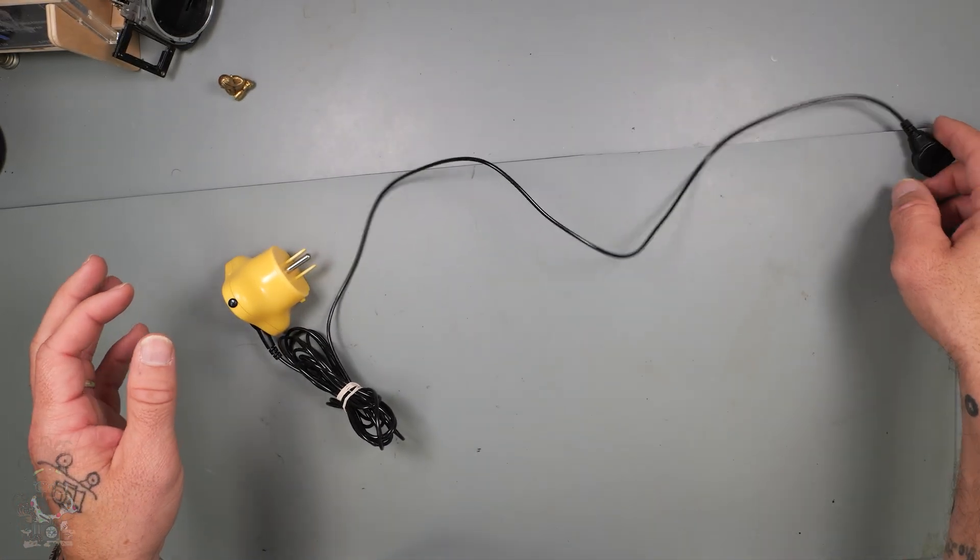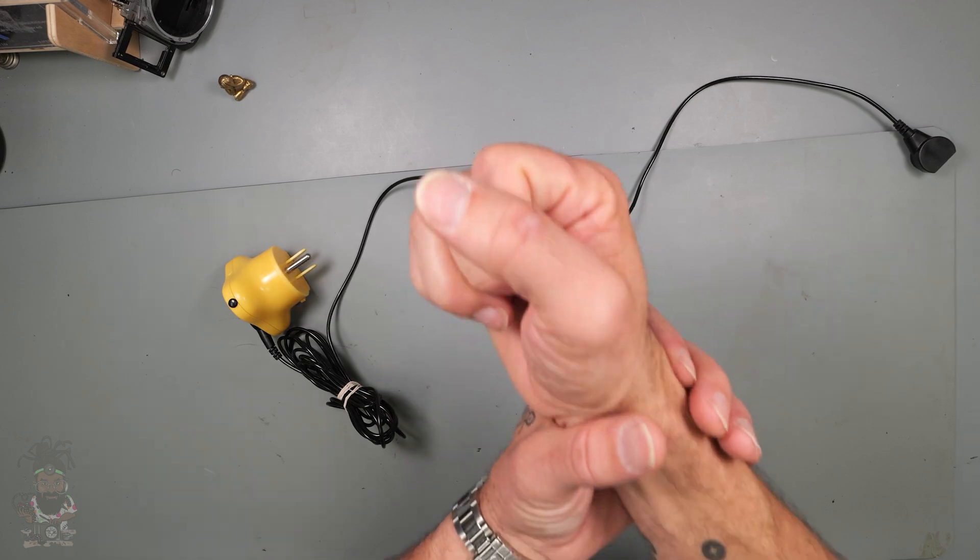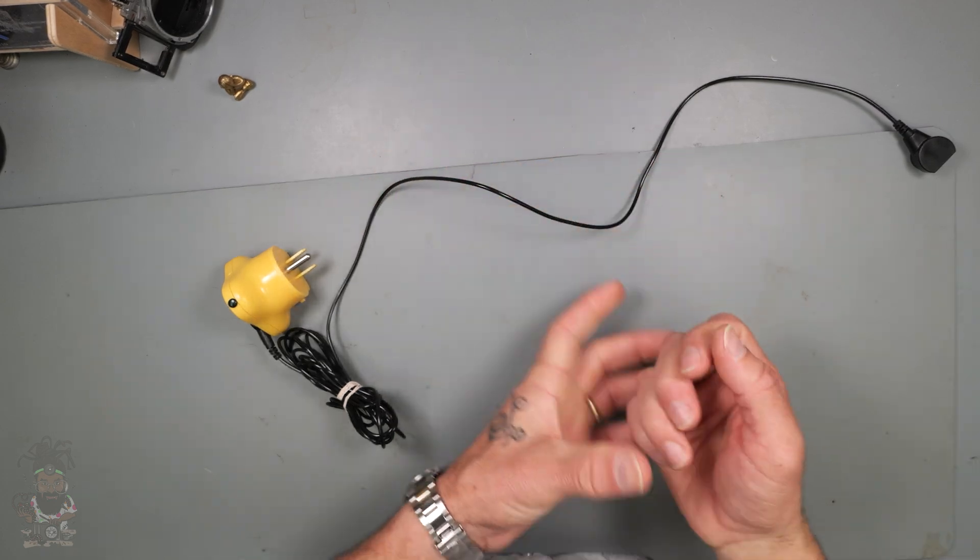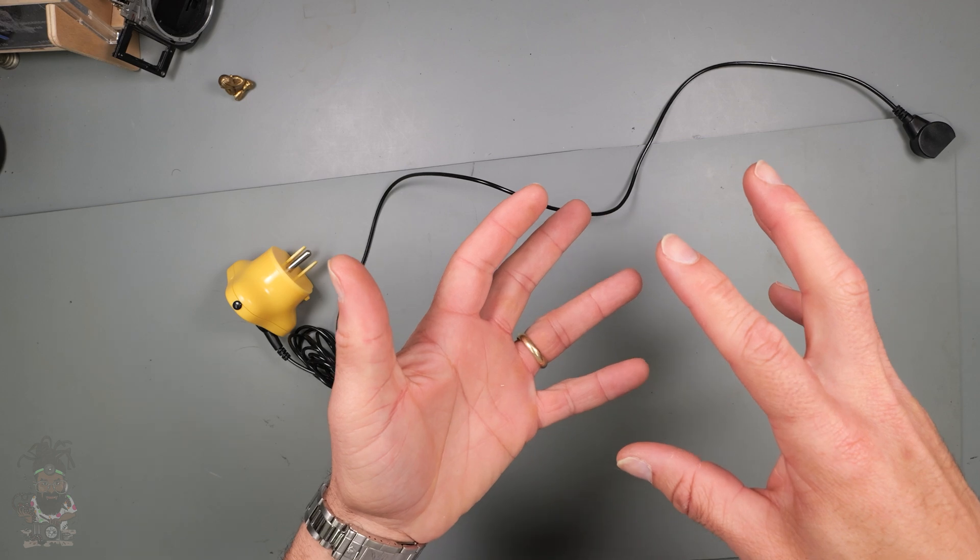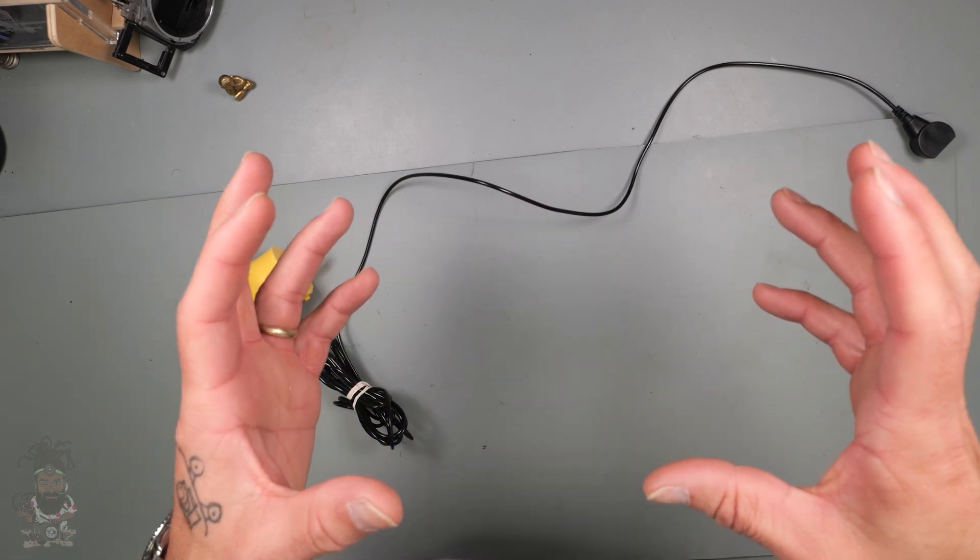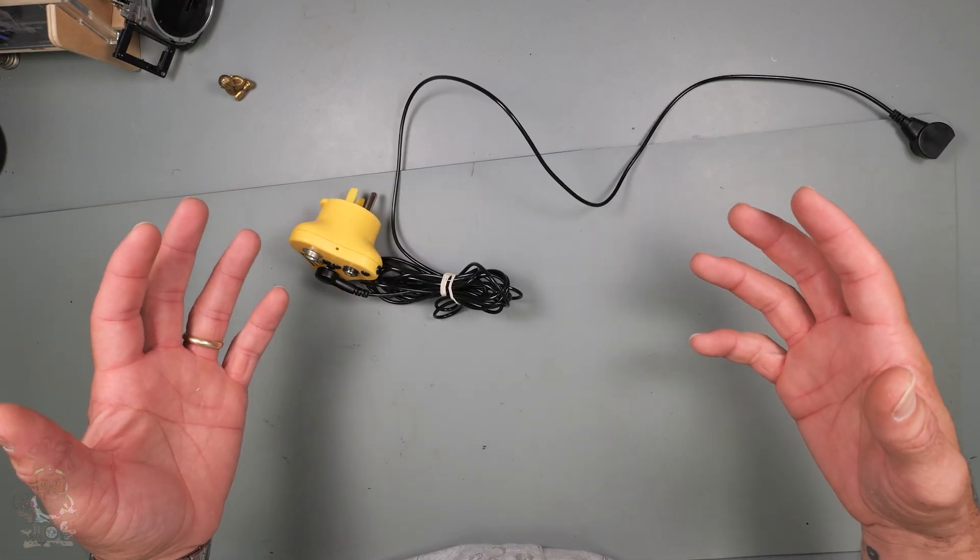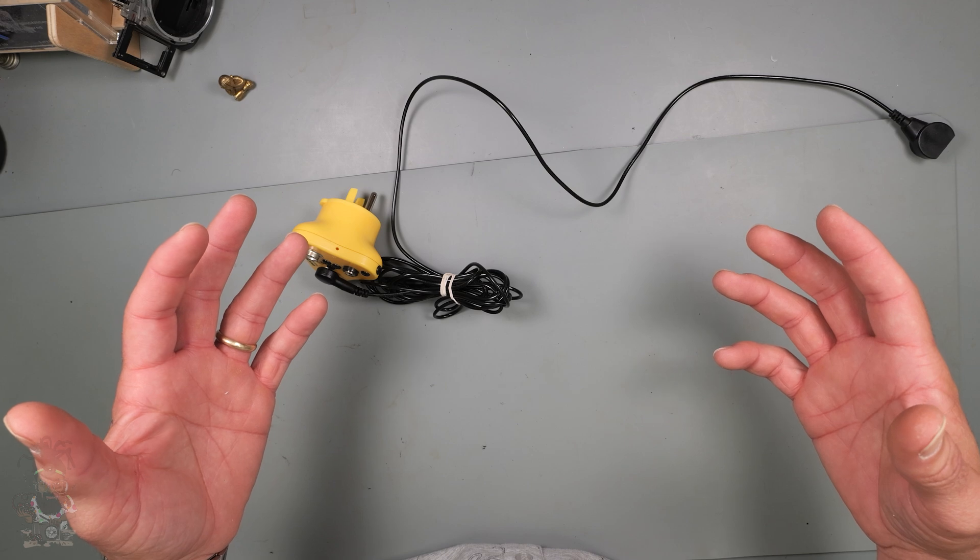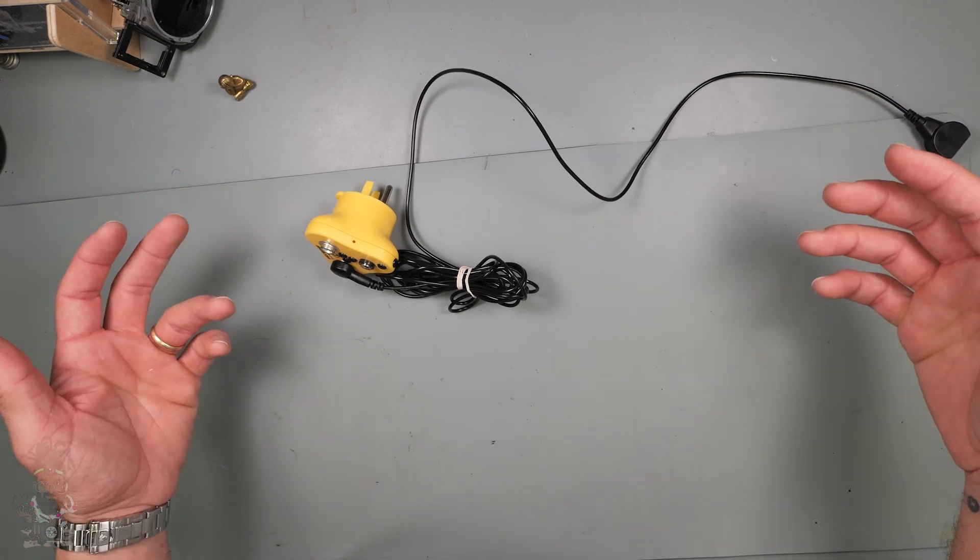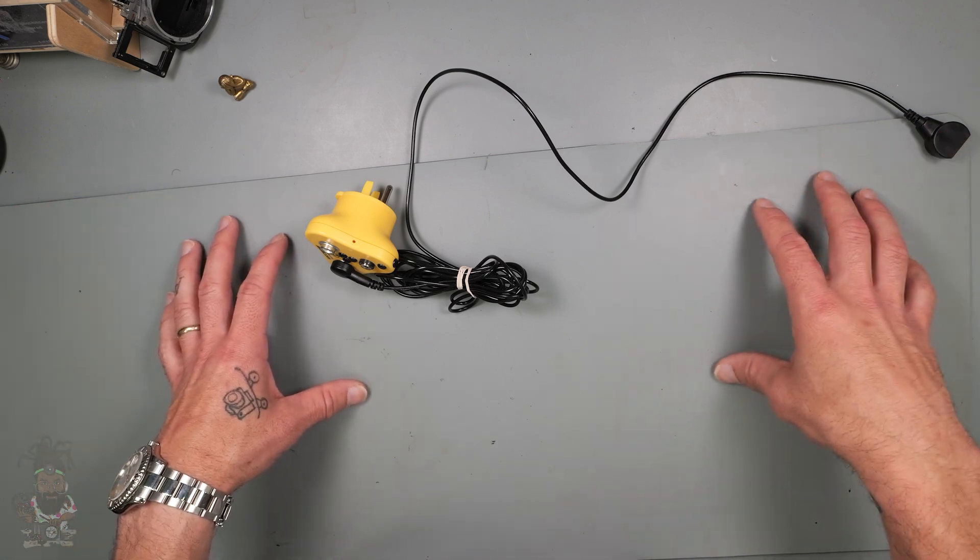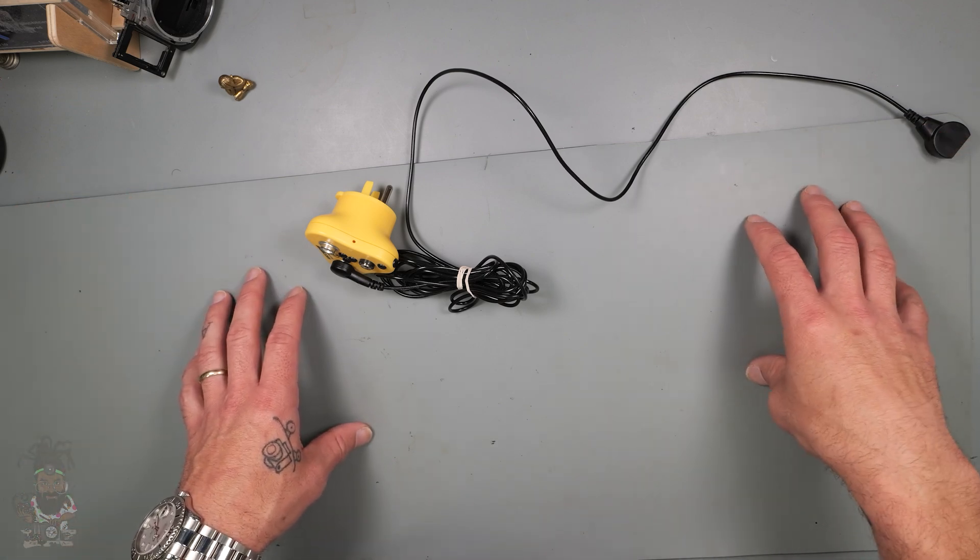This mat actually came with a wristband that you can put on and connect into there and it gives you a whole lot more safety with static electricity. Connecting tools, electronics, and you to a common ground point, you lower the chance of passing electricity through you and electronics.